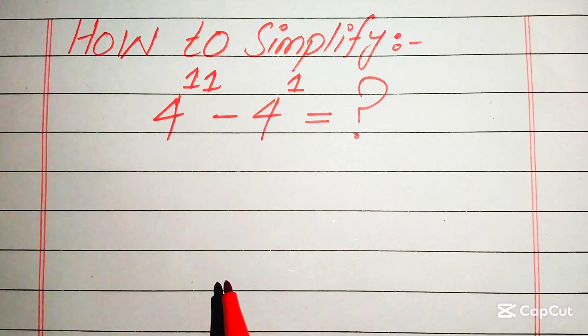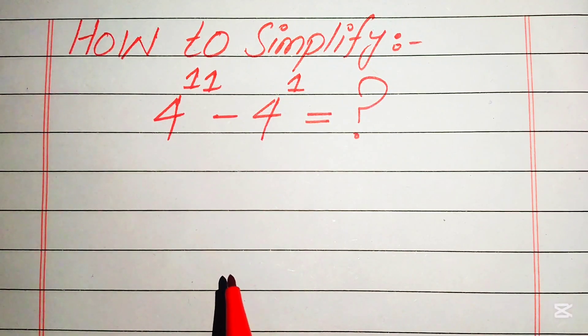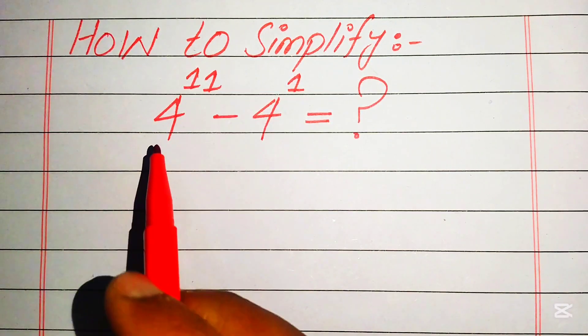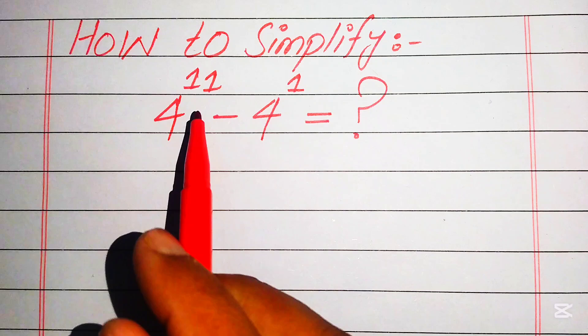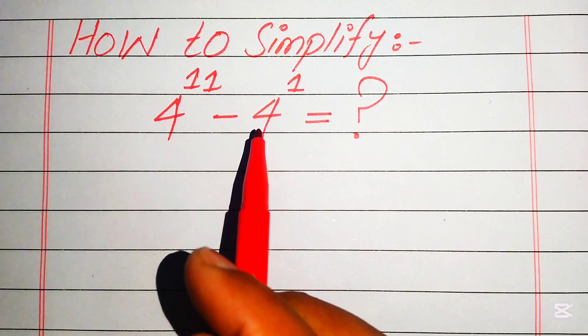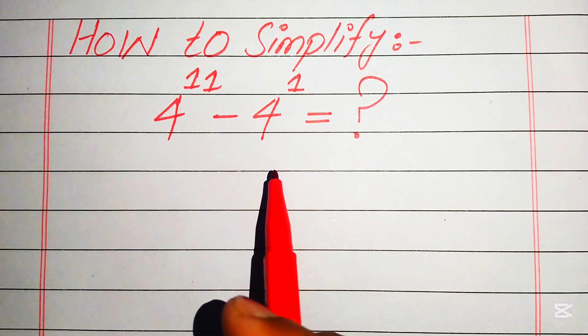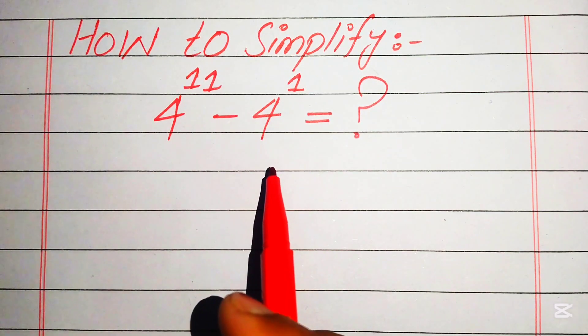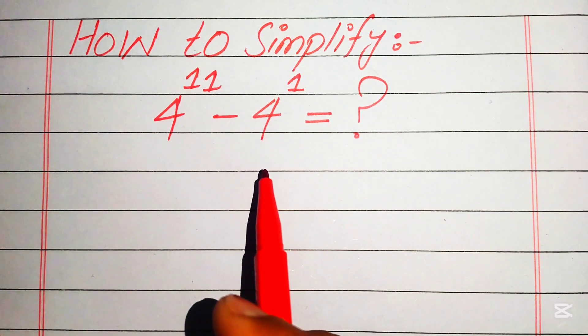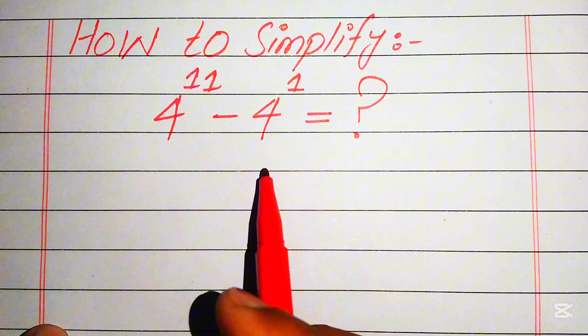Hello everyone. Today we look at how to simplify this nice algebraic expression. We have 4 to the power of 11 minus 4 to the power of 1, and we will write this into simplified form.